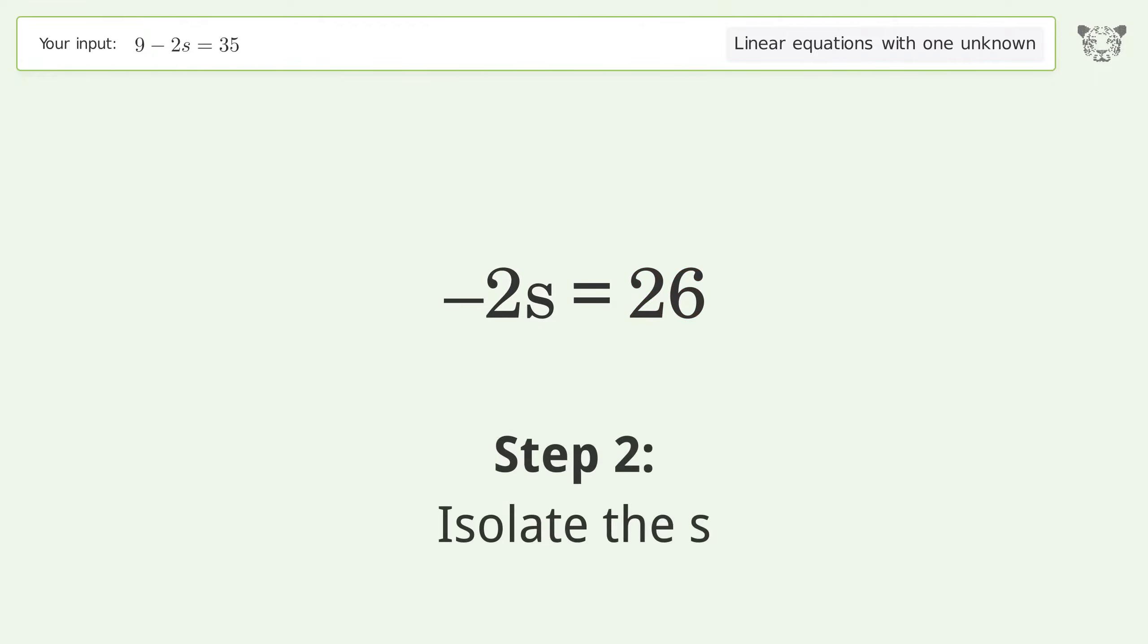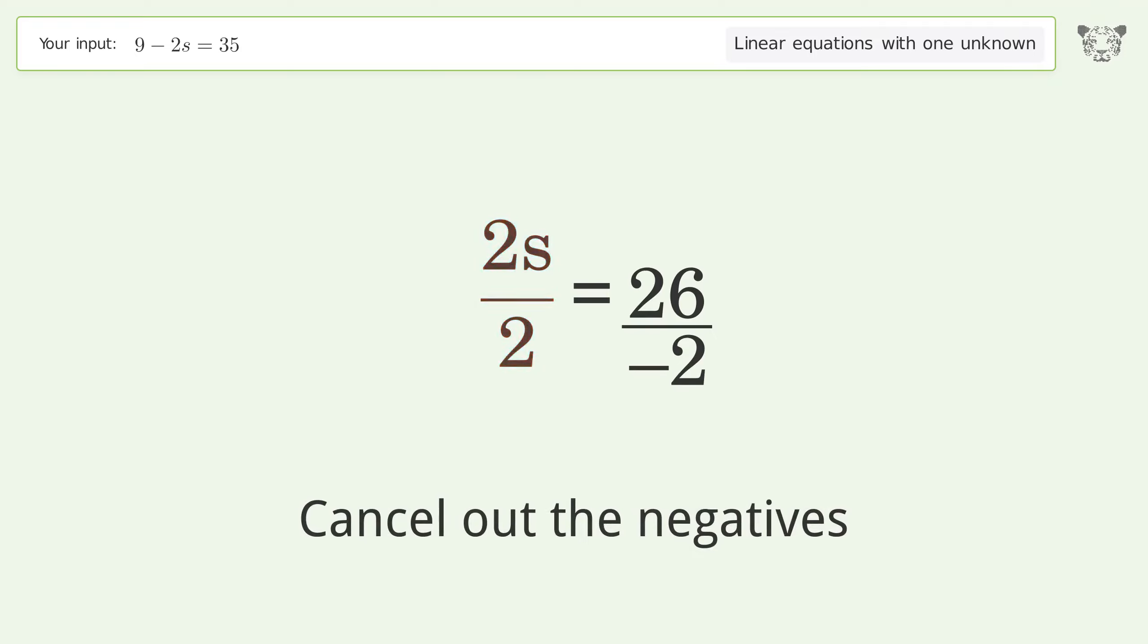Isolate the s. Divide both sides by negative 2. Cancel out the negatives. Simplify the fraction.